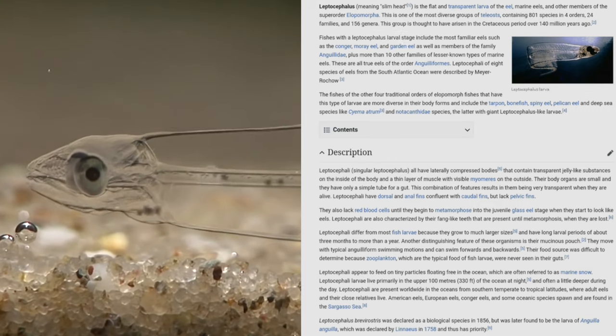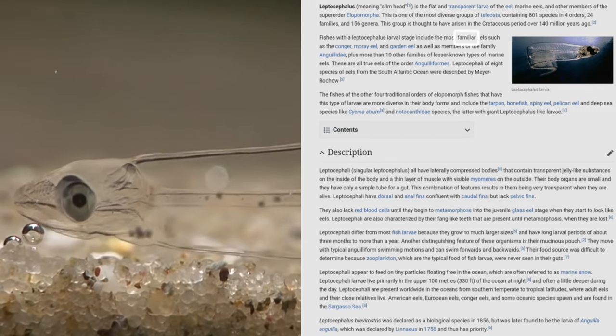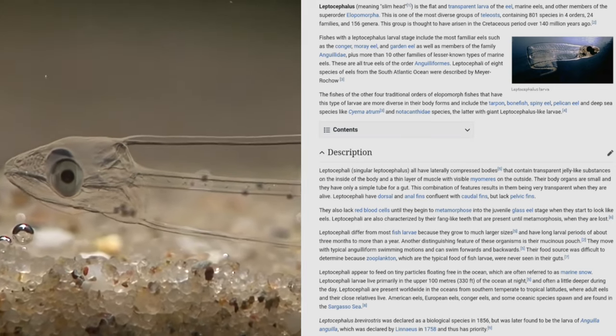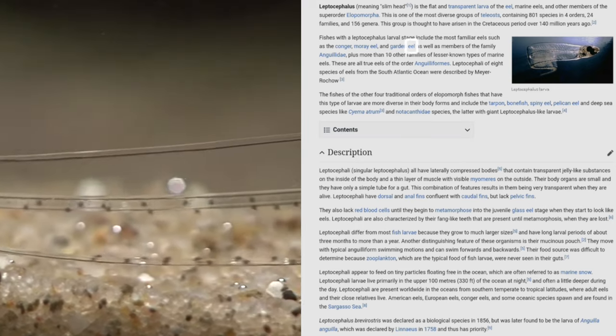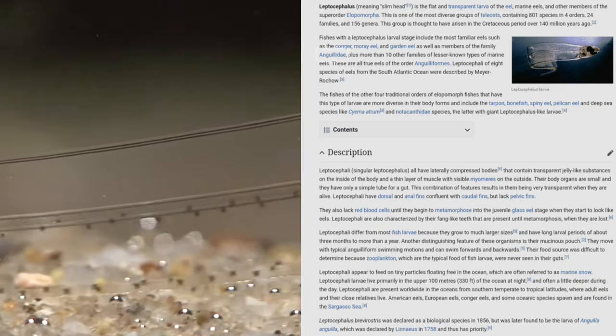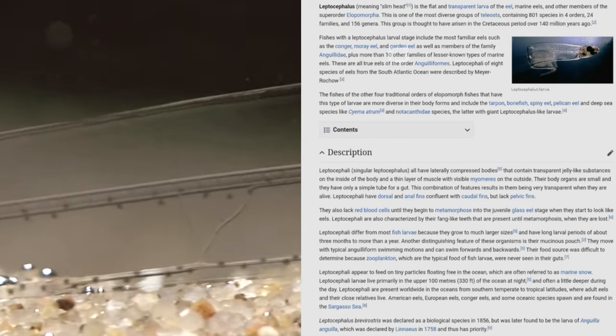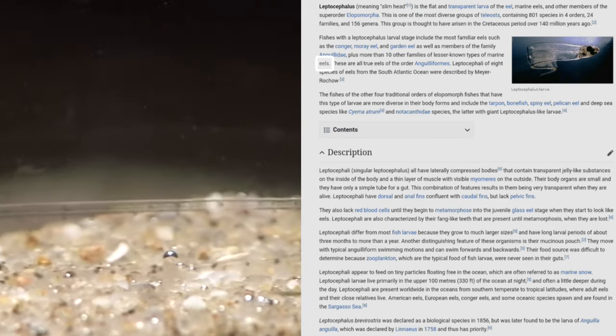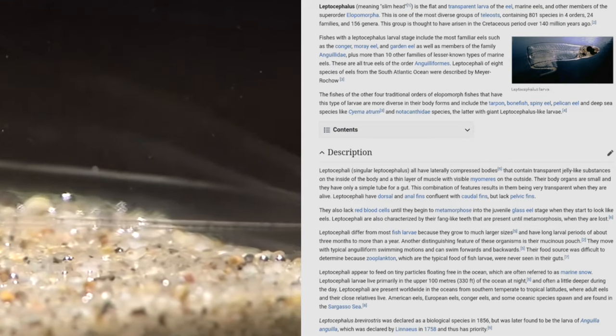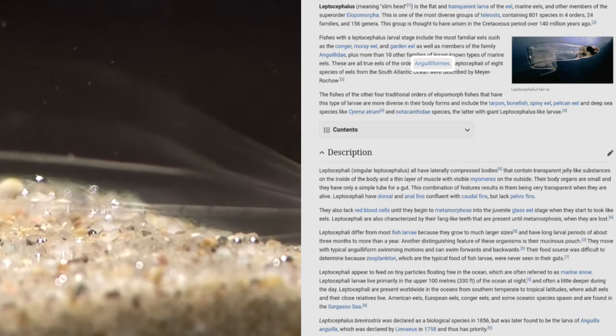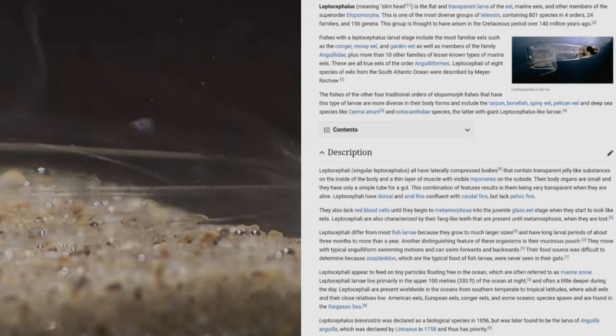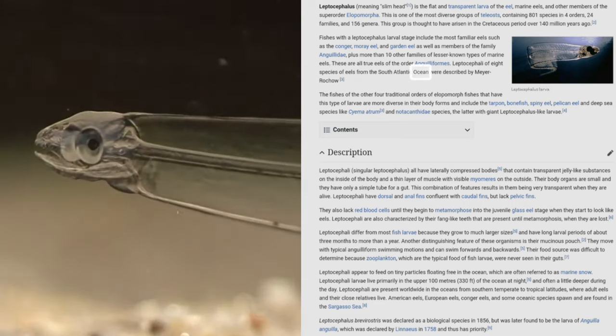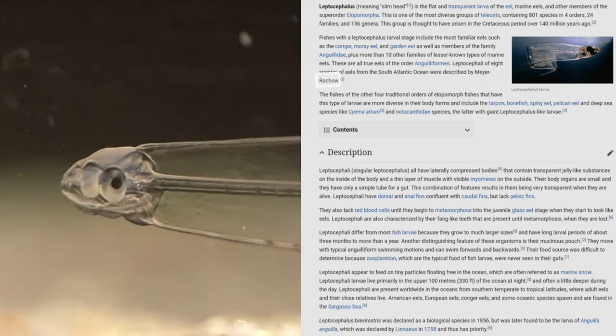Fishes with a leptocephalus larval stage include the most familiar eels such as the conger, moray eel, and garden eel, as well as members of the family Anguillidae, plus more than 10 other families of lesser-known types of marine eels. These are all true eels of the order Anguilliformes.